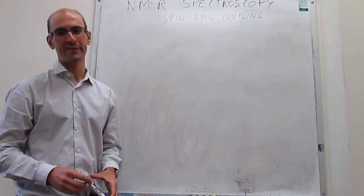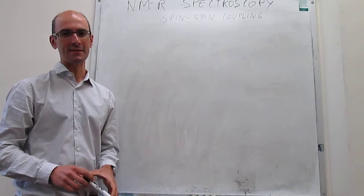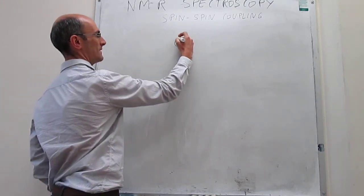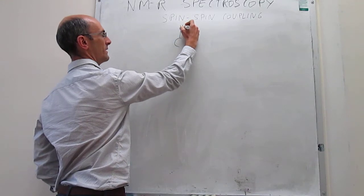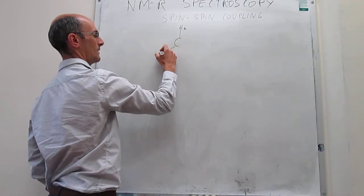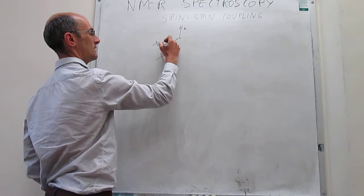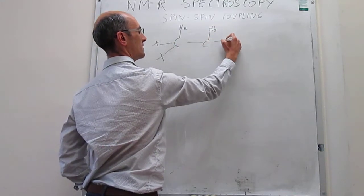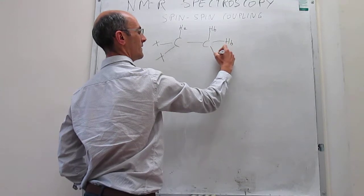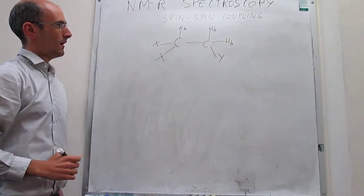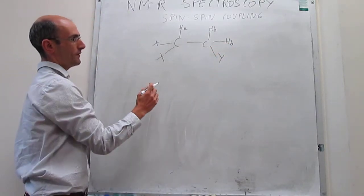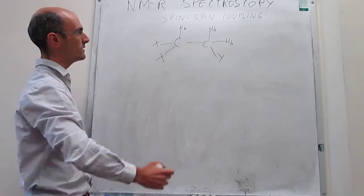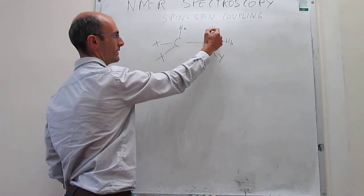In this video, we continue with our analysis of spin-spin coupling by looking at a molecule that is like this: H_A, X, X, C, H_B, H_B, and then Y. So here we're going to have two signals in the proton NMR spectrum — one due to H_A and one due to H_B.